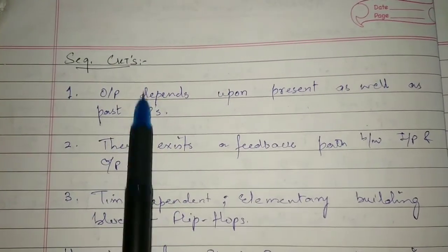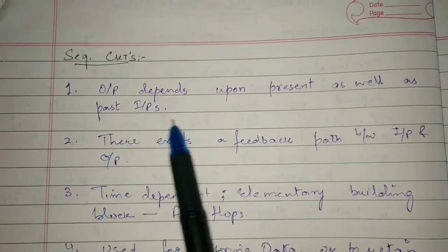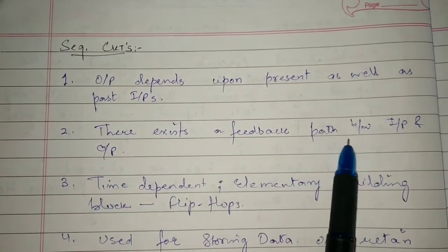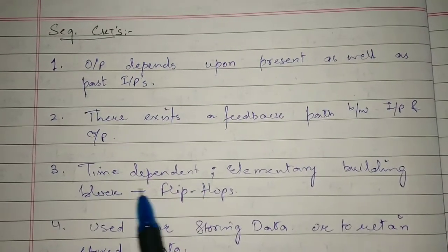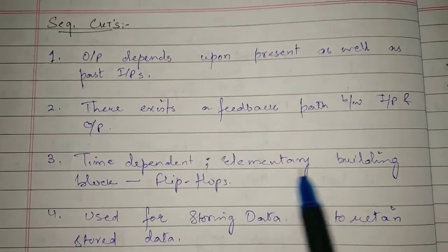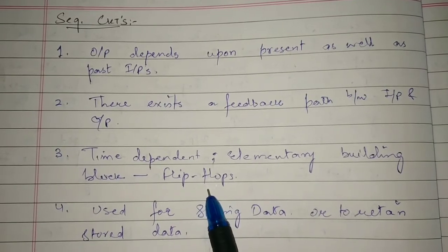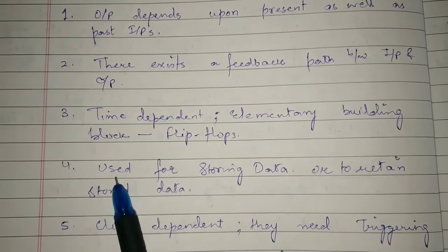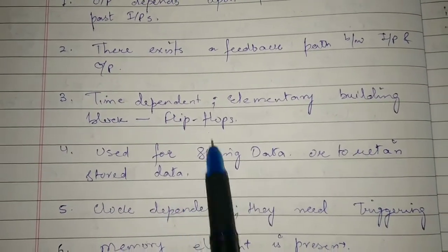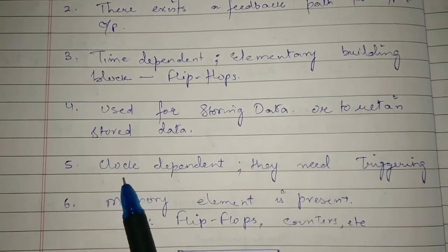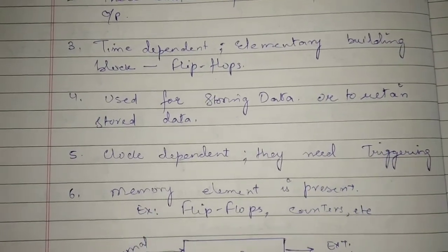On the other hand, sequential circuits' output depends upon present as well as past inputs. There exists a feedback between input and output. These are time-dependent circuits, and the elementary building blocks are flip-flops. Flip-flops have memory, and sequential circuits are used for storing or retaining data. Sequential circuits are clock-dependent and also need triggering.